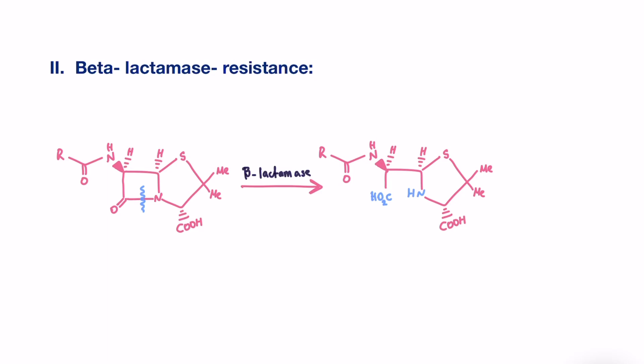Beta-lactamase is an enzyme which inactivates penicillin through a similar pathway seen in the acid condition, through a ring-opening reaction. You can see here, it attacks the beta-lactam ring, leading to opening of the ring, and thus inactivating the penicillin.